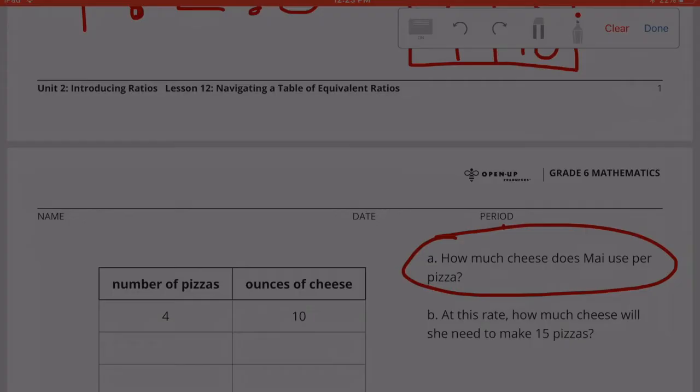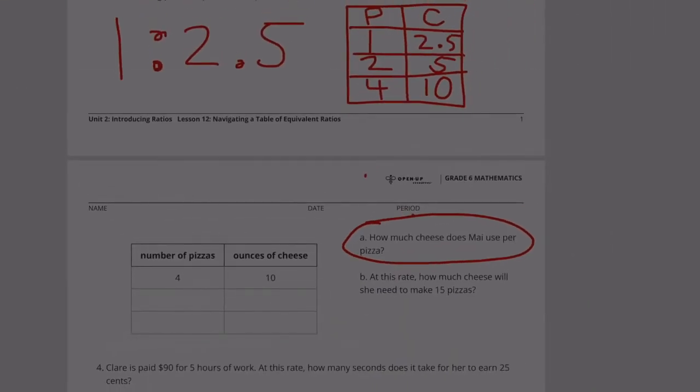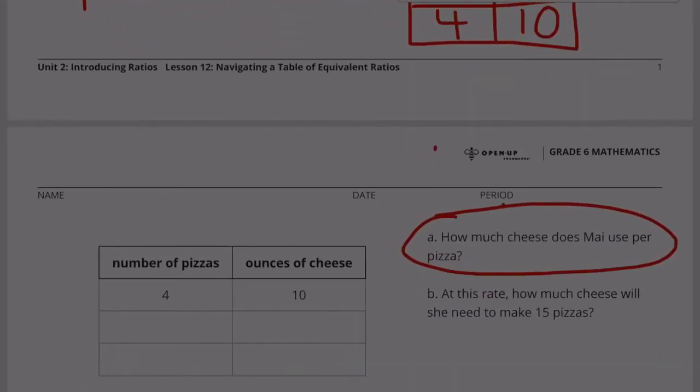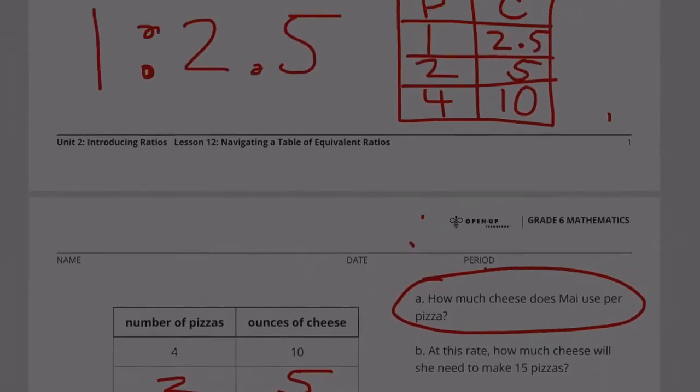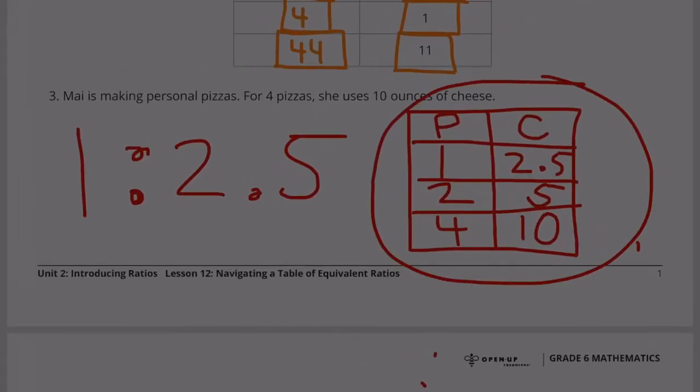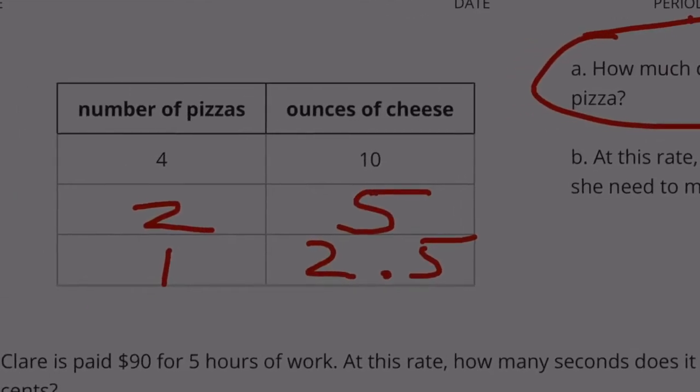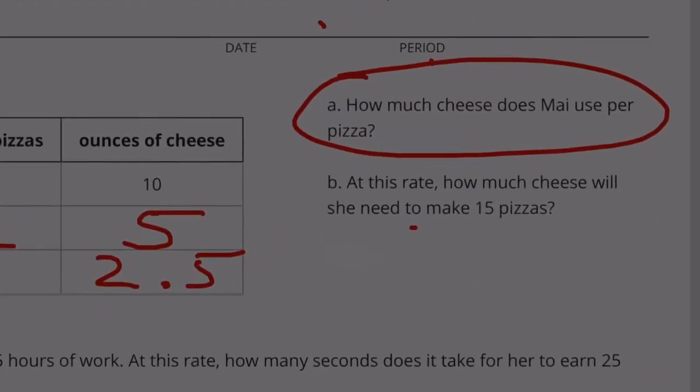A. How much cheese does Mai use per pizza? We figured that out already. So we could go right here, 4 to 10, 2 to 5, and 1 to 2.5. Just like we did here. We had 4 to 10 at the bottom. And here we have 4 to 10 at the top. It doesn't matter. 2.5 ounces of cheese per pizza.